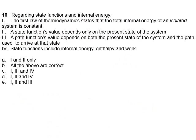On any of these problems, if you don't understand, just email or you can call — try to make it between about noon and six or seven in the evening unless it's an emergency. Now there's a multiple-choice question regarding state functions and internal energy. The first law says the internal energy total is constant — true. A state function's value depends only on the present state — true. A path function's value depends on the present state and the path used — true. State functions do include internal energy and enthalpy, but they don't include work; work is a path function. So choice D is wrong, and A, B, and C are all right — answer choice E (all of the above for 1, 2, and 3).